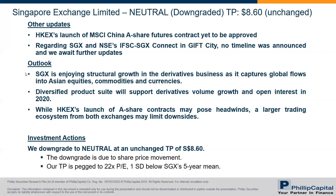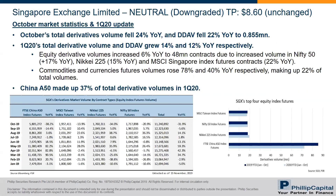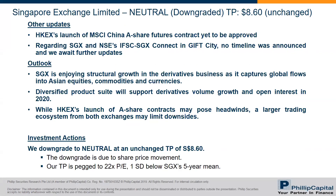While Hong Kong Exchange's launch of A-share contracts may pose headwinds — since 37% of total volumes is from China A50 — a larger trading ecosystem from both Hong Kong Exchange and SGX should limit downsides. Our investment action is to downgrade SGX to neutral with an unchanged target price of $8.60. The downgrade is mainly due to share price movement, but fundamentals and our forecast remain the same. Our financial model is updated to reflect the new revenue reclassification, with target price pegged to 22x PE, one standard deviation below.